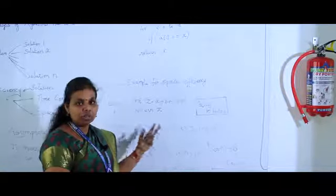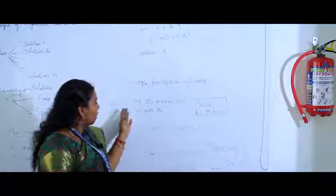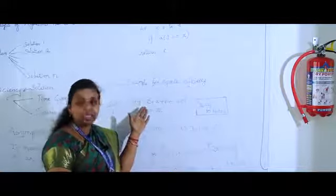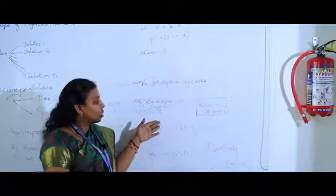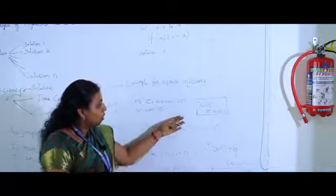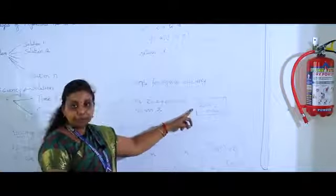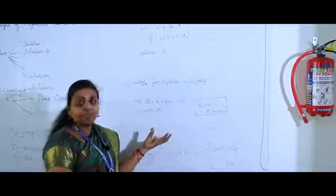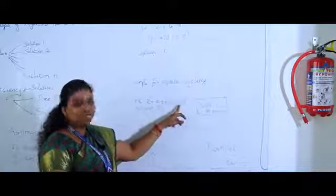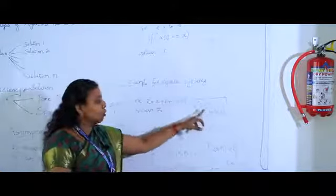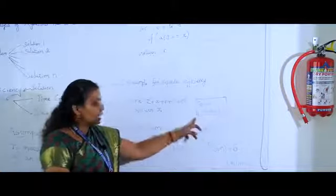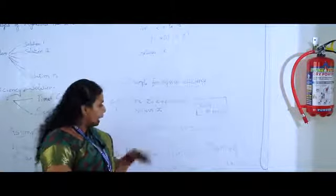Next, consider an example for space efficiency. I have two sets of code. In code one, I am directly adding a, b, c, and d and storing the result in z and returning z. Here I am talking about how much memory space is being utilized. The minimum memory allocated for an integer variable is 2 bytes. There are 4 integer variables, so 2 into 4, plus 2 bytes for returning z, totaling 10 bytes of memory.